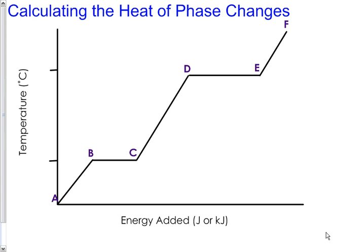Now it's useful to look at this curve in sections. So we're going to identify these two flat sections where we have them as B and C and D and E. This first flat section would be known as the melting point or the freezing point. Melting and freezing are the same thing, just depending on which direction you're going. Section D and E is known as the boiling point.